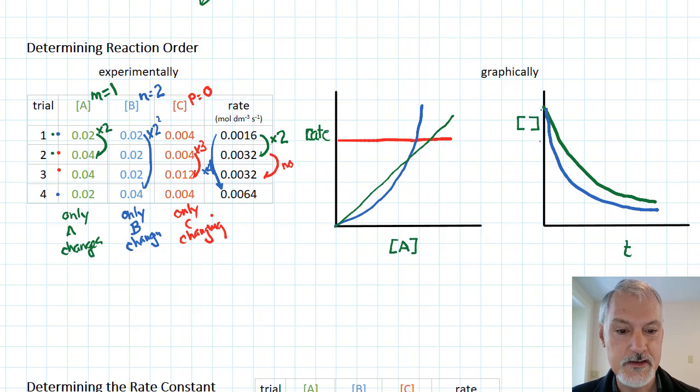What that would look like on a rate versus concentration graph would be simply a horizontal line. No matter what the concentration, the rate remained unaffected. And over here, on a concentration versus time graph, that would again be a straight line, but sloping straight down. So these are all various ways of communicating what the potential reaction orders can be.